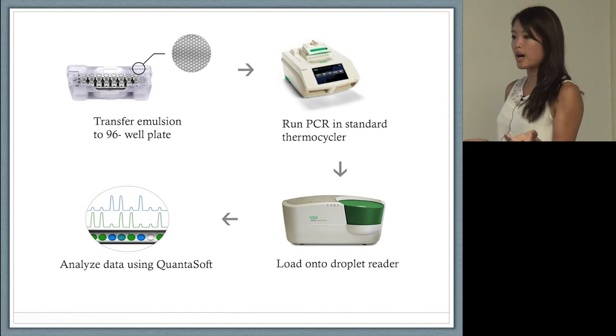Copy number estimations can be calculated off of the fraction of positive droplets using Poisson statistics.